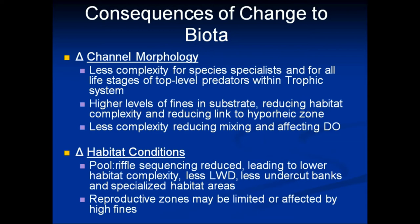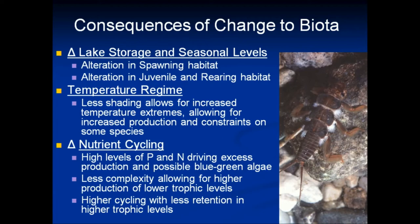From a habitat standpoint, changes can alter where animals' living space is, how it's utilized, and their ability to reproduce and provide nursery habitat. For lake storage and seasonal level alteration, spawning habitat is affected — as I mentioned about lake trout. If you drop the levels too low in the fall, you may expose all your spawning shoals, which means you'll lose your lake trout populations. It may also alter juvenile and rearing habitat depending on the time of year.